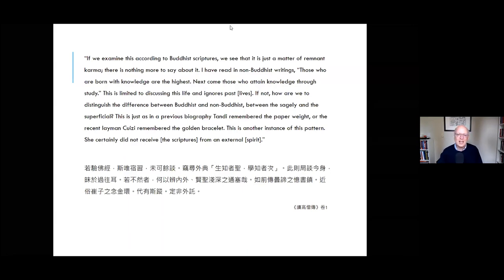Daoxuan wasn't only critical of Sima Qian—he's also critical here of Confucius for his ignorance of karma and rebirth. If not, he continues, how are we to distinguish the difference between Buddhist and non-Buddhist, between sagely and superficial? This is just as in a previous biography, Tan Di remembered the paperweight—this is a similar story to the Yang Hu story I told before, where Tan Di remembers as a child a paperweight he had in a previous life. Or the recent layman Cui Zhe, who remembered the golden bracelet. This seems to be a reference to the Yang Hu story again, but mixed up with another Tang rebirth story about a man named Cui Xian. This is another instance of this pattern. She certainly did not receive the scriptures from an external spirit. The point is that the girl must in a previous existence have memorized these scriptures.